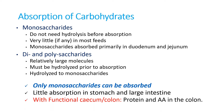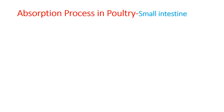With a functional cecum and colon, only protein and amino acids are absorbed in the colon, but the amount is quite low compared to prominent animals. This is the absorption process in poultry in the small intestine.